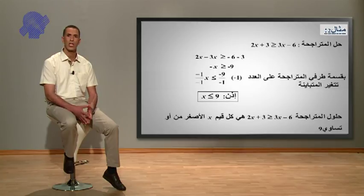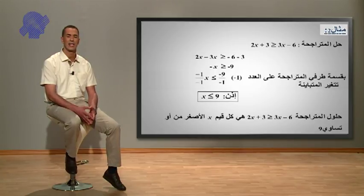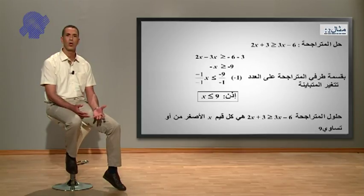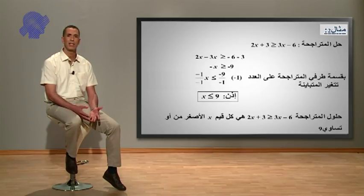إذن حلول المتراجحة 2X زائد 3 أكبر أو يساوي 3X ناقص 6 هي كل قيم X الأصغر من أو تساوي 9.